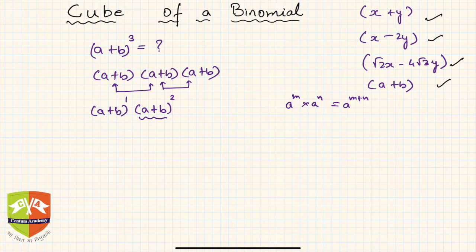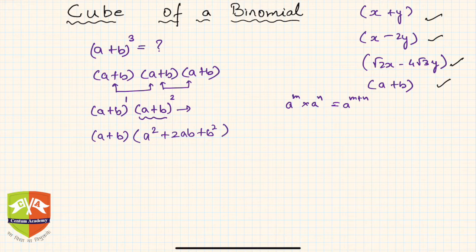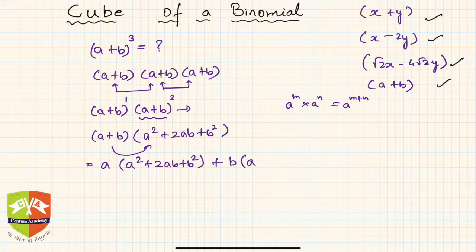We already know (a + b)² — if we expand that identity it is a² + 2ab + b². Now let's go for the expansion: (a + b)(a² + 2ab + b²). We distribute the product using the distributive law.